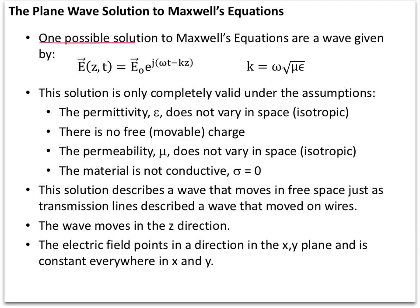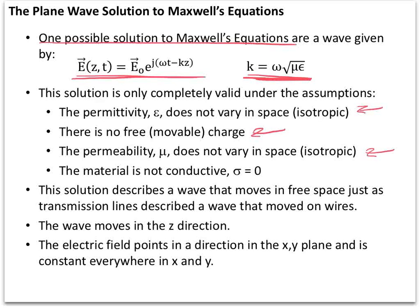To summarize: one possible solution to Maxwell's equations is a wave with an electric field vector E-naught having sinusoidal variation both in time and along the Z axis. The variable k is given by the frequency of the wave as well as the permeability and permittivity of the region being propagated through. This solution is only completely valid under certain assumptions: epsilon doesn't vary in space (isotropic), there's no movable charge, mu is also isotropic, and the material is not conductive. For a wave propagating through air, vacuum, or many insulators this is valid; waves going through metal — not so good.